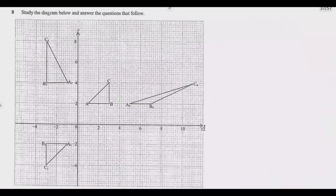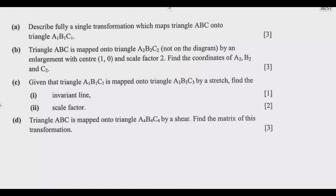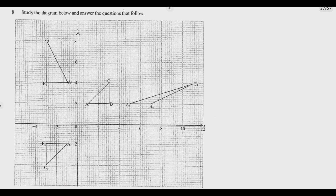We look at question 8. Study the diagram below and answer the questions that follow. So this question is from transformation. Question 8L is: describe fully a single transformation which maps triangle ABC onto triangle A1B1C1. So if you compare these two triangles, the first thing we need to ask ourselves is: has the size of the shape changed? Is the area increased or reduced? The area is maintained.